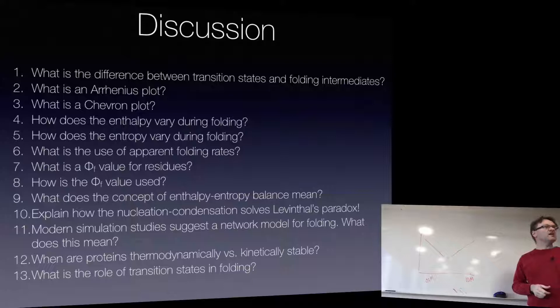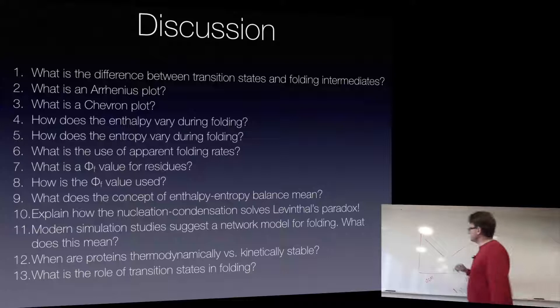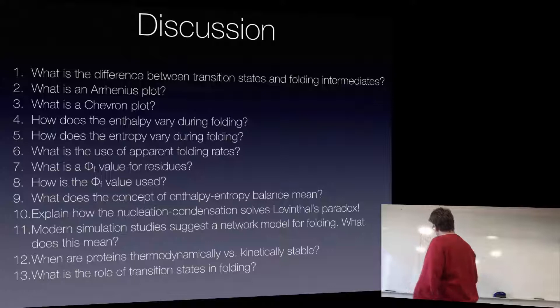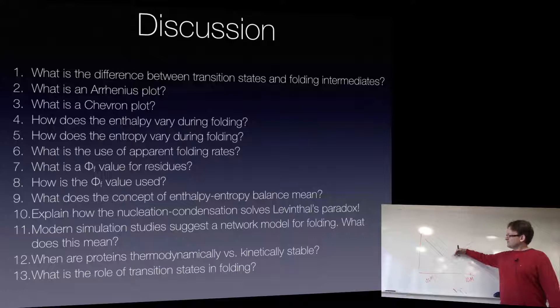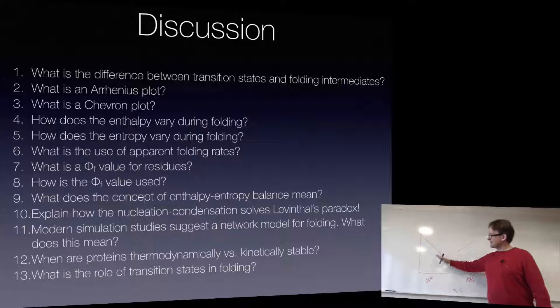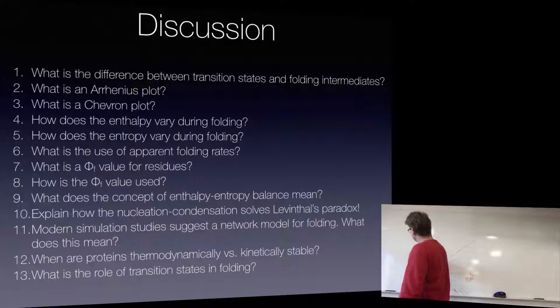The point is a single Chevron plot doesn't really tell you anything at all — it just tells you that at very high denaturant concentration things will unfold. We don't need a Chevron plot to tell us that. The interesting thing is when you start having patterns — lots of curves for various mutations. By looking at the relative change of these curves, how they have moved, you extrapolate these lines and see first how much the left line has moved and then how much the right line has moved. You can use this to extract from the logarithm of K the differences in reaction rate, which you can translate to free energies.